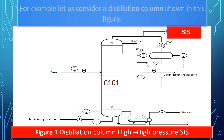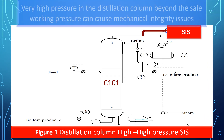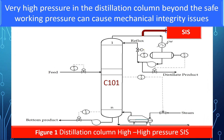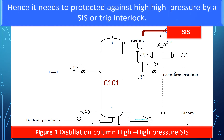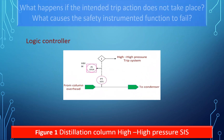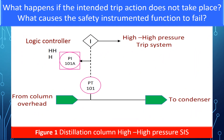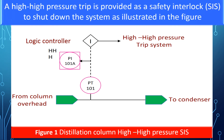For example, consider a distillation column. Very high pressure in the distillation column beyond the safe working pressure can cause mechanical integrity issues and has the potential to cause loss of containment. High pressure can be caused by loss of cooling water, loss of utility, or control valve failure. Hence it needs to be protected against high-high pressure by a SIS or TRIP interlock. A high-high pressure TRIP is provided as a safety interlock to shut down the system. What happens if the intended TRIP action does not take place? What causes the safety instrumented function to fail?